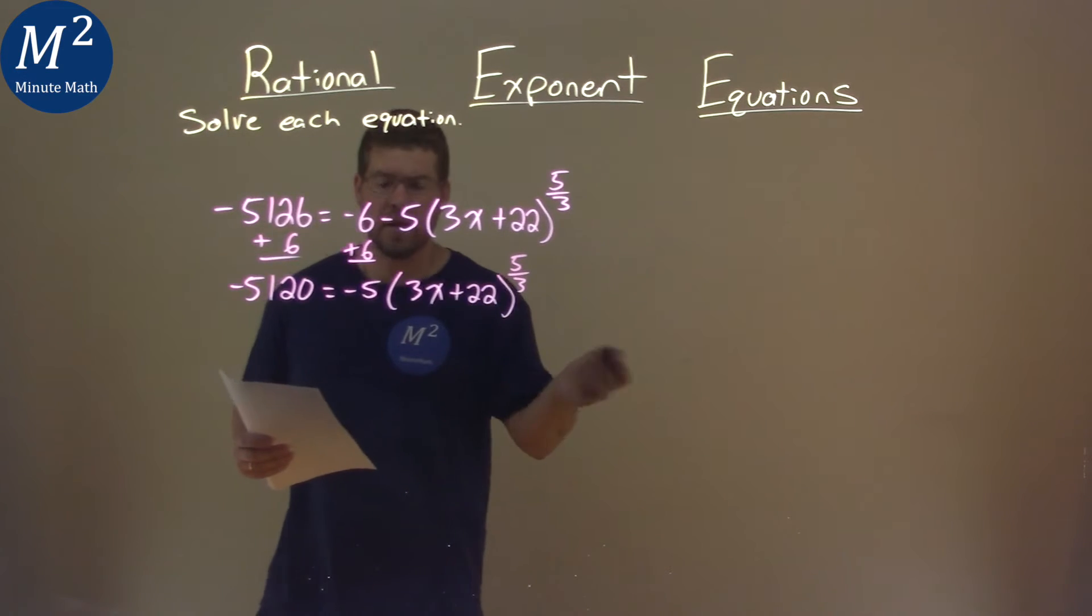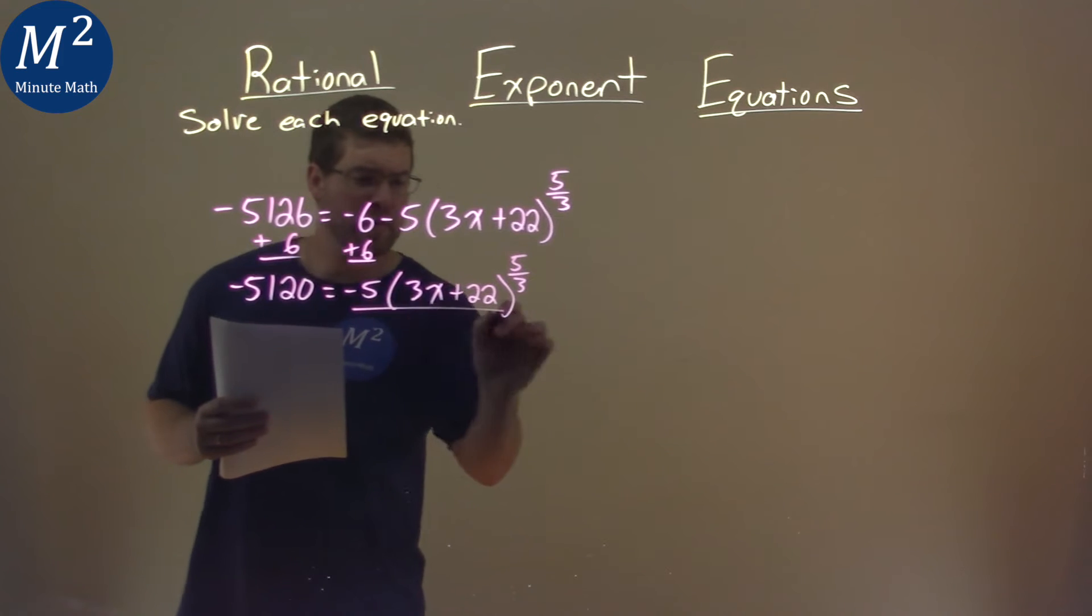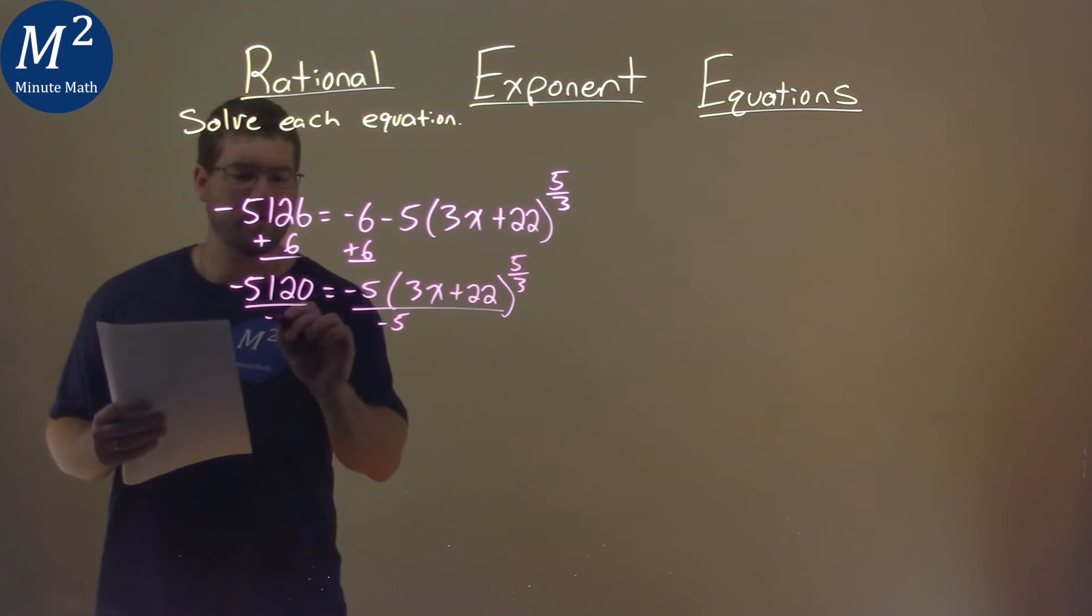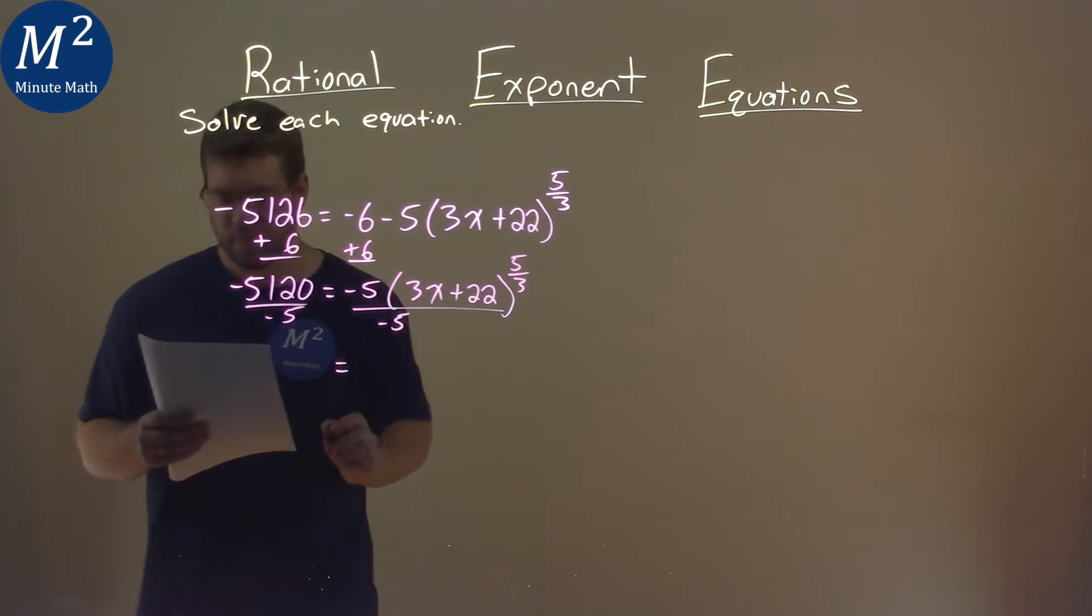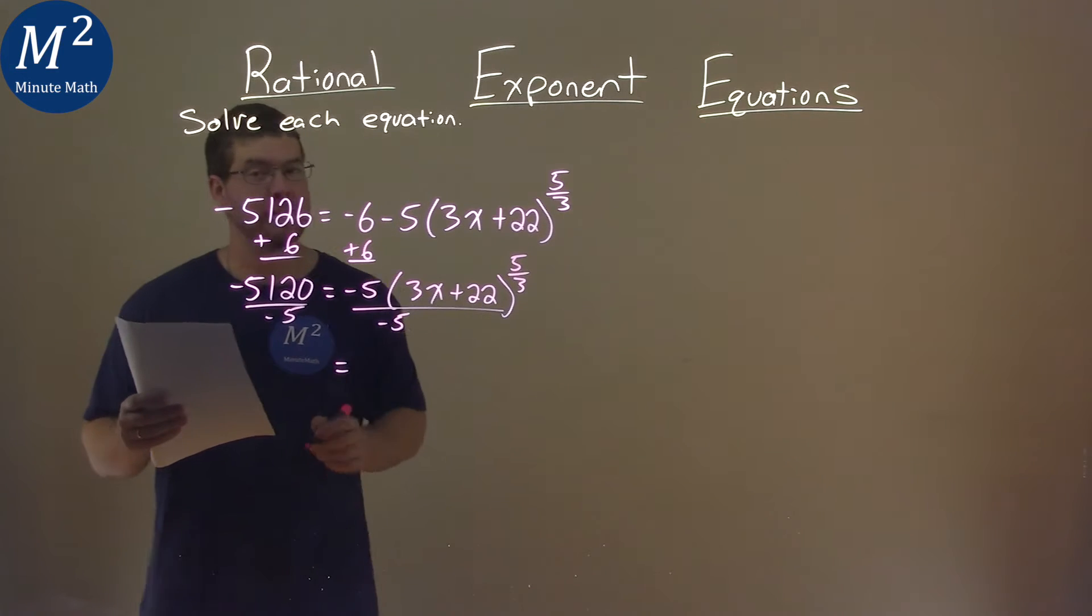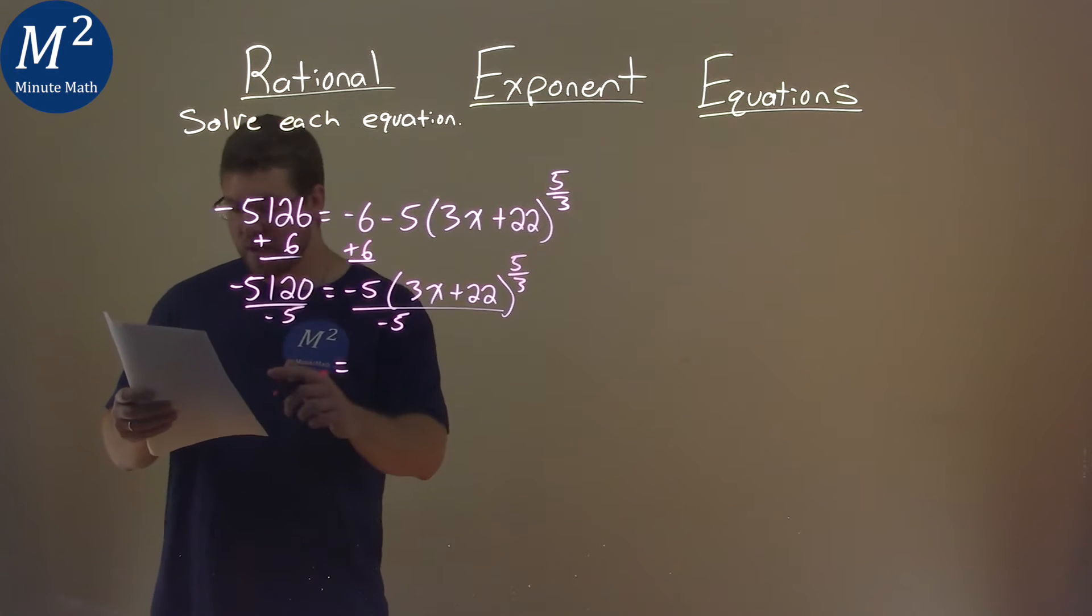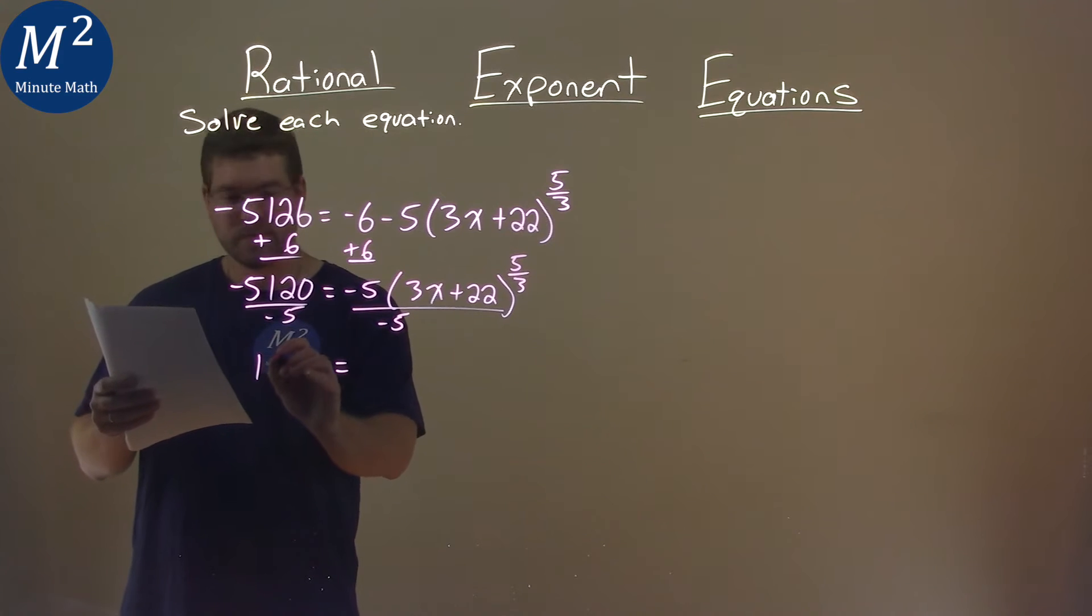There's multiplication going on here. Let's divide both sides by negative 5. Negative 5,120 divided by negative 5—two negatives make a positive—gives us 1,024.